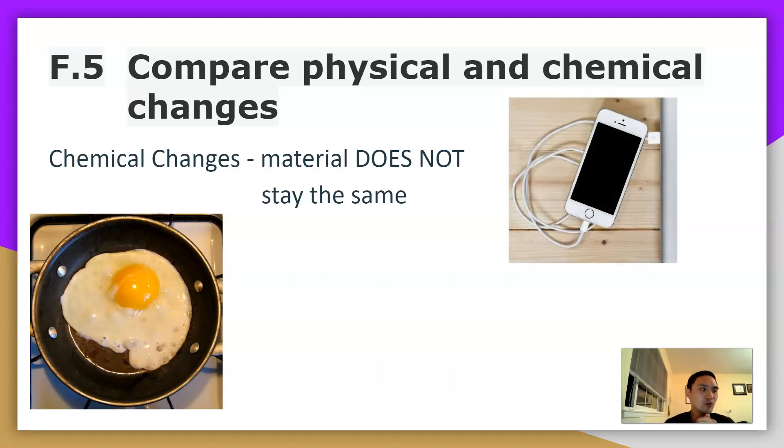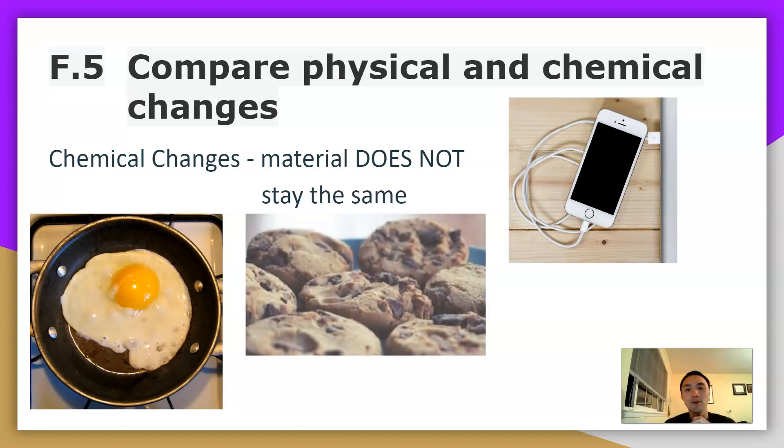Charging a phone, you basically charge the phone battery and then the batteries are converted to light on your phone screen. So that is a chemical change. Baking a cookie. You originally started with flour, milk, egg, sugar, and then you mix it all together. Then you put it under heat and then you made a cookie. You cannot physically or chemically revert the cookie back to the original ingredients. So that is also going to be a chemical change.